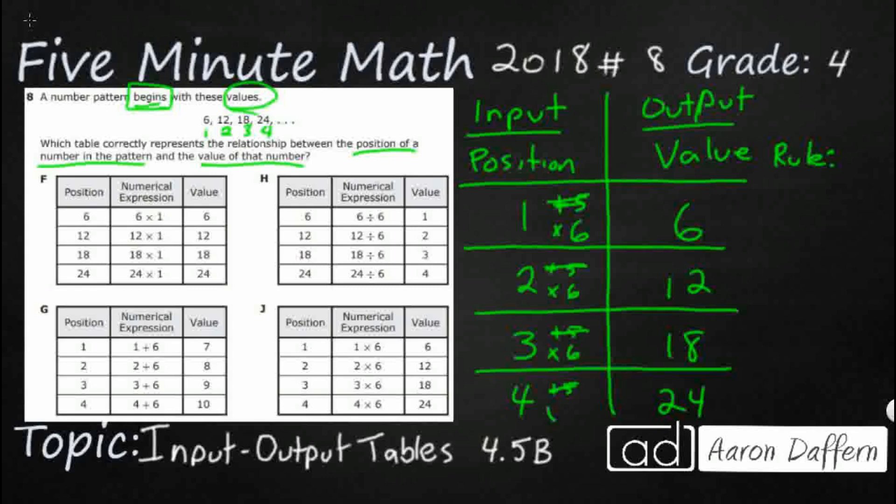3 times 6 makes 18? Yes. 4 times 6 makes 24. So there we go. We have our input-output table and we are multiplying everything by 6. Let's see which one looks like our input-output table.